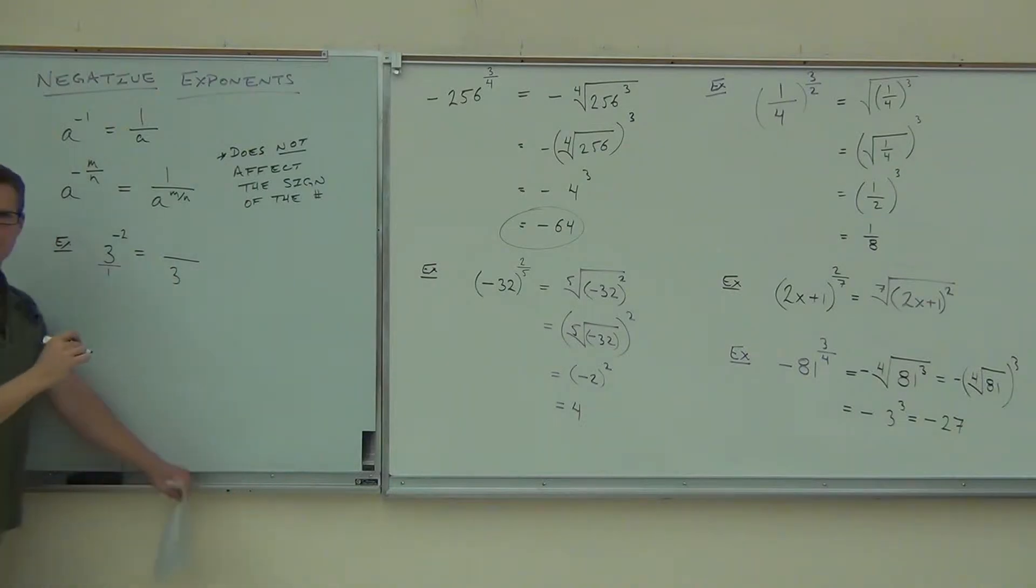So that would be 3 to the, is it still going to be negative 2? No. Positive 2. Did it change the sign of my number? No. It's just my exponent, but what's going to be on the top of my fraction? 1. By this rule, move it to the bottom of the fraction, change the sign of your exponent.